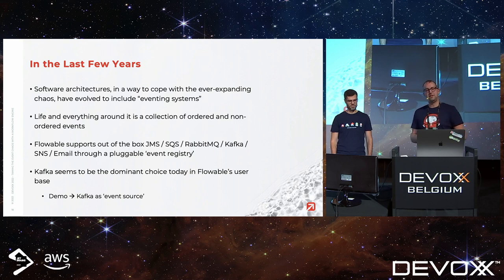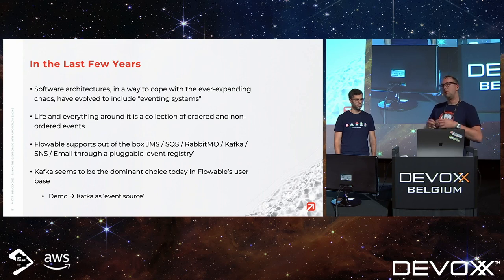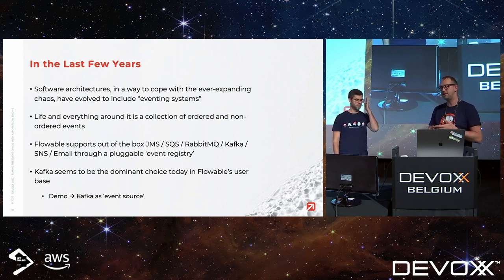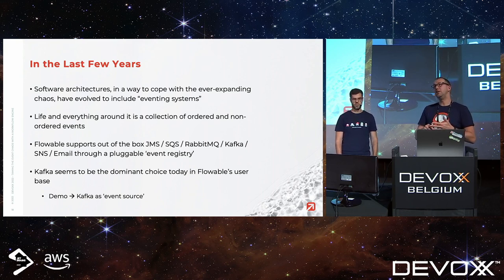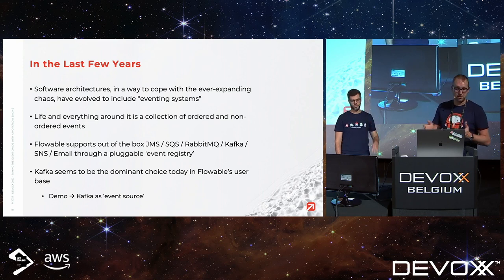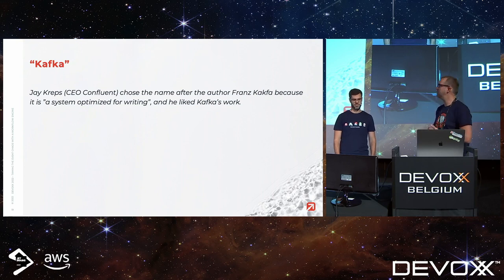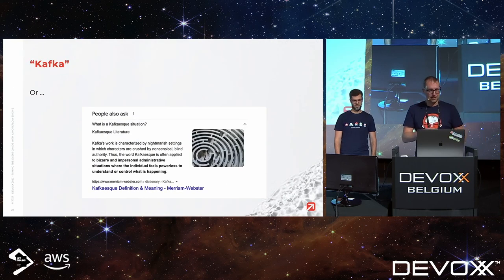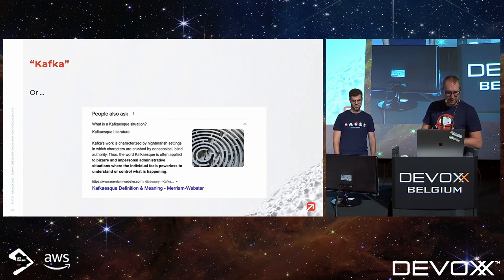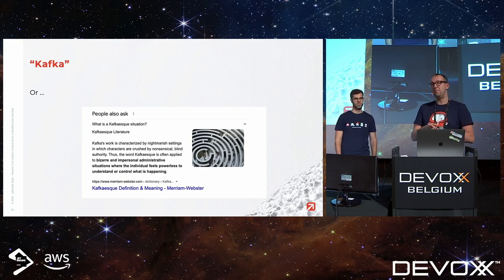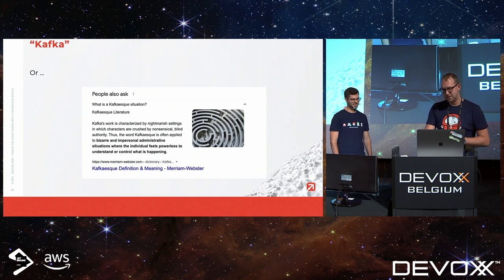Moving now into the event chaos — a lot of ways to cope with the chaos of lots of data being produced are eventing systems. Flowable has native support for JMS, SQS, RabbitMQ, and email, but predominantly in our customer base Kafka is being chosen. Interestingly, 'Kafkaesque' is defined as describing bizarre and impersonal administrative situations where the individual feels powerless to understand or control what is happening — which could equally be a definition of a developer's daily job.